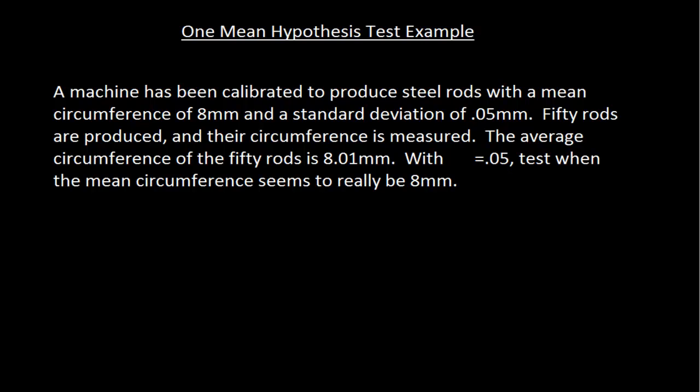I'm going to look at an example of a hypothesis test on one mean, and I'm going to do this three different ways: using confidence intervals, using cutoff values, and by producing a p-value. The problem is that a machine has been calibrated to produce steel rods with a mean circumference of 8 millimeters and a standard deviation of 0.05 millimeters. 50 rods are produced and measured, with an average circumference of 8.01 millimeters. With alpha equals 0.05, test whether the mean circumference seems to really be 8 millimeters.